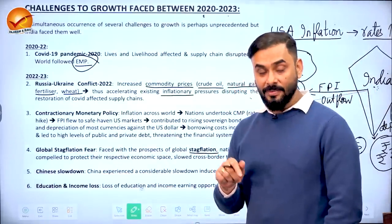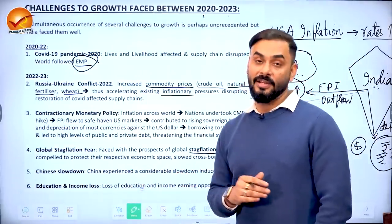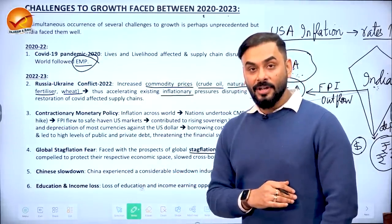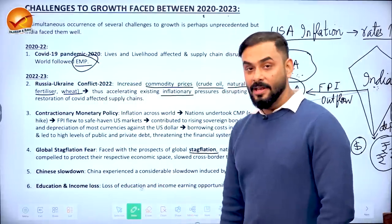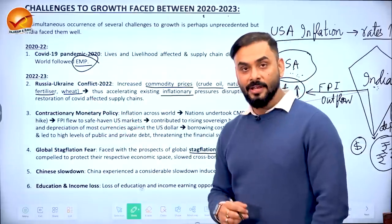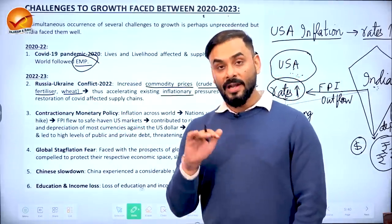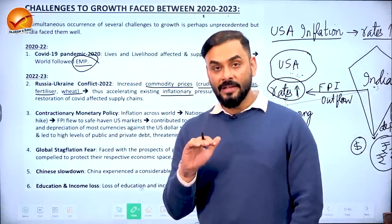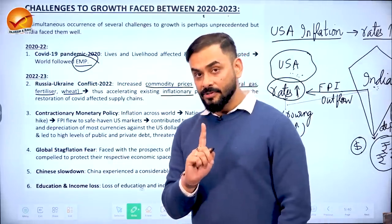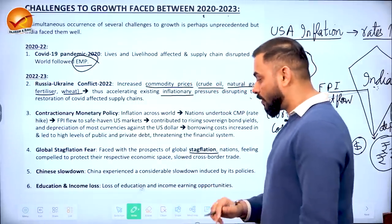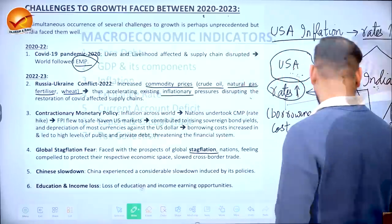The fifth challenge was the Chinese slowdown — because of it, raw materials weren't reaching different parts of the world, creating production problems. The sixth challenge was education and income loss: when inflation and slowdown hit the economy, low-income groups suffer the worst — their education and income opportunities start to shrink.